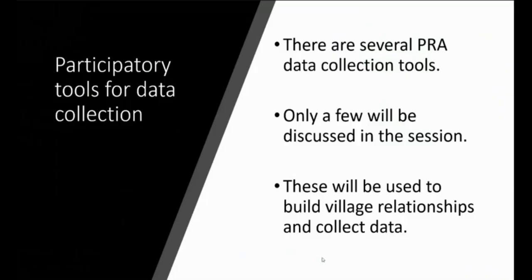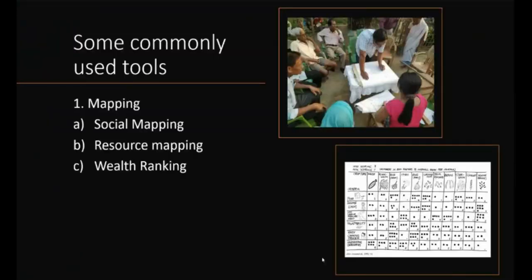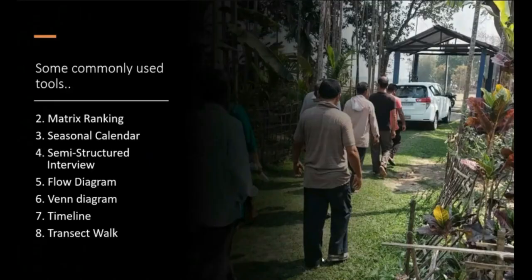There are several PRA data collection tools, and only a few will be discussed in this session. These will be used to build village relationships and collect data — mainly village-level data. Some commonly used tools are mapping — including social mapping, resource mapping, wild mapping, agroecological mapping — as well as matrix ranking, seasonal calendar, semi-structured interview, flow diagram, hand diagram, timeline, and transect walk. Nowadays, all rural development programs of the government require data collection through PRA, because people's participation is also expected and they become clear about the program.